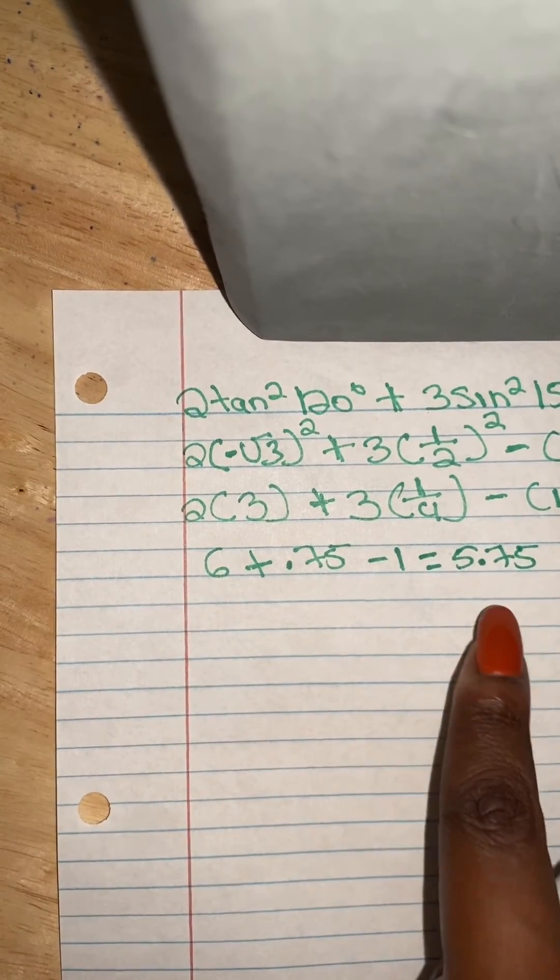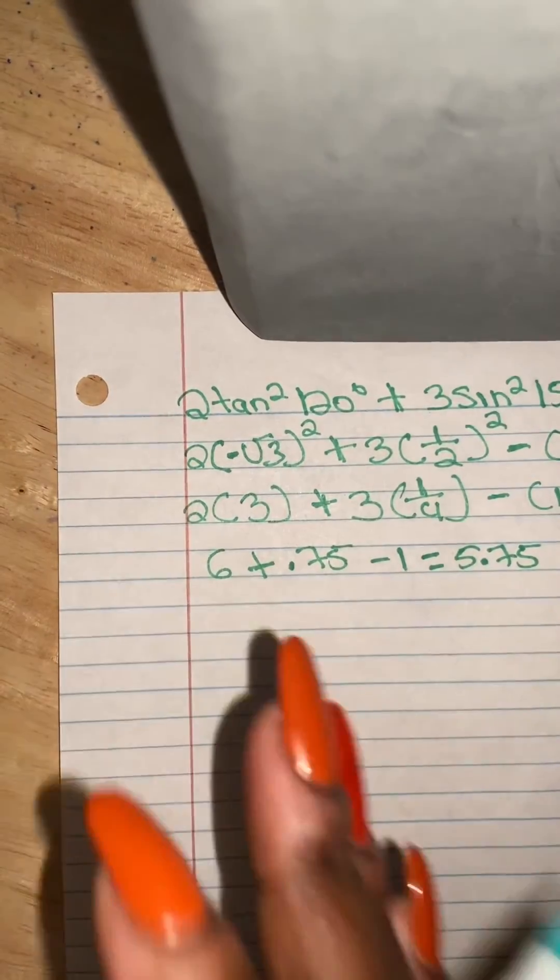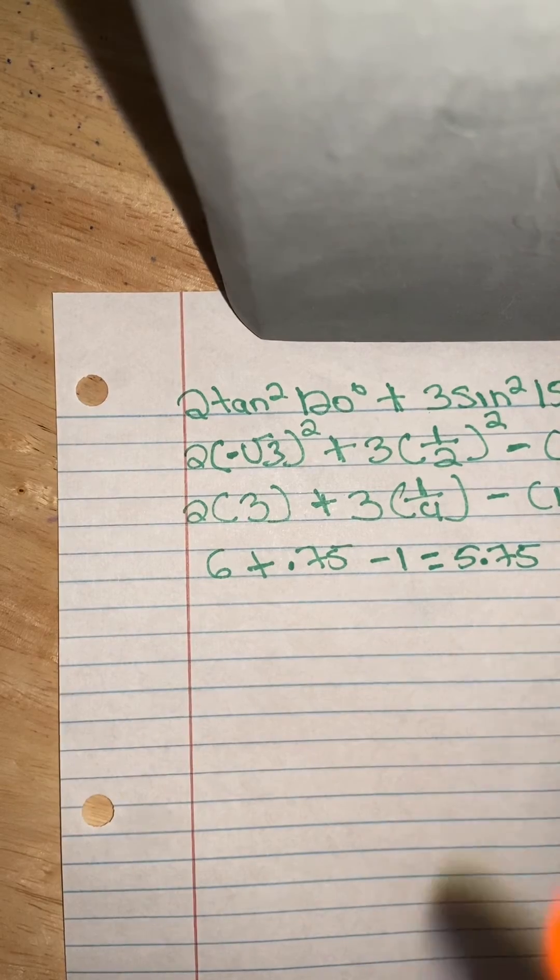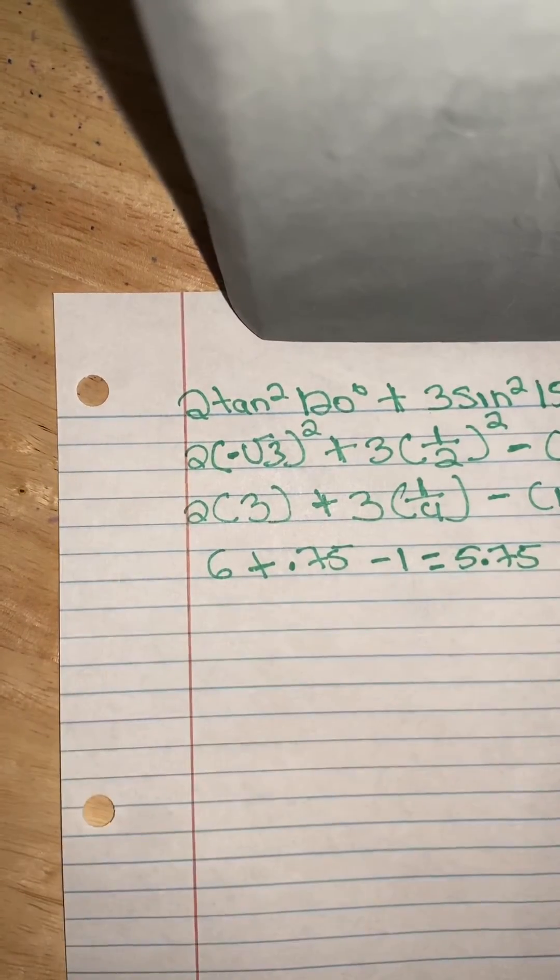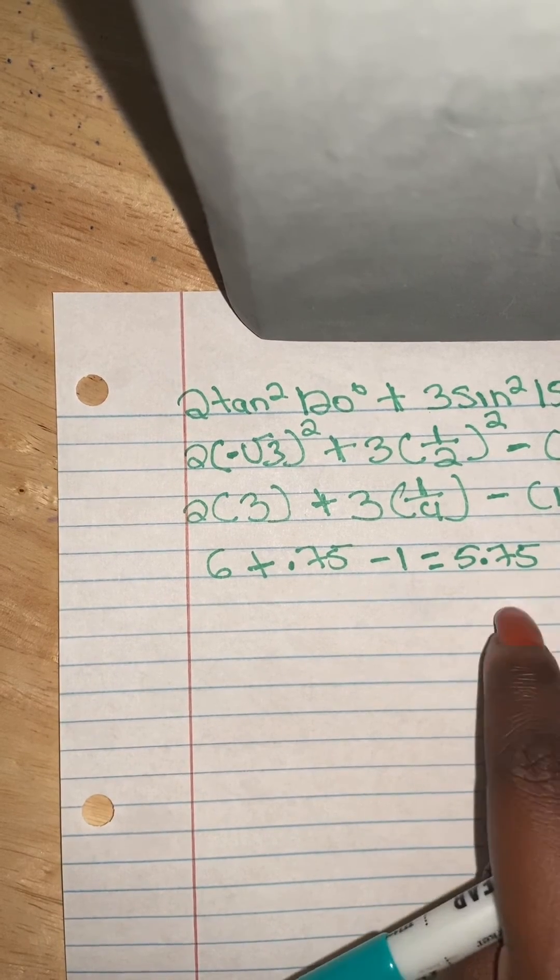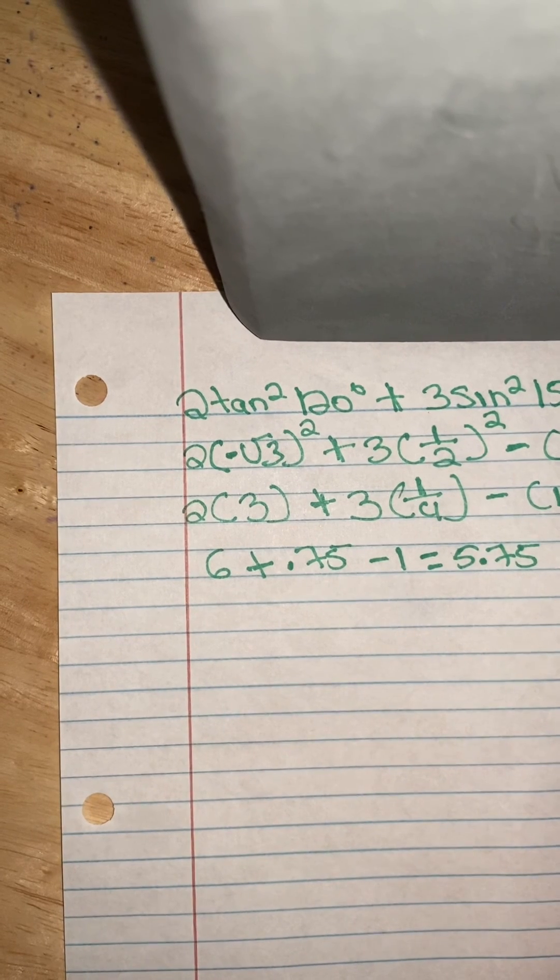And then this is how we figure out this problem right here by individually figuring out the value of tangent, sine, and cosine, do the exponents, and everything else in between. And that's how we come up with this number right here. So it's pretty much, you know, cut and dry and pretty much simple.